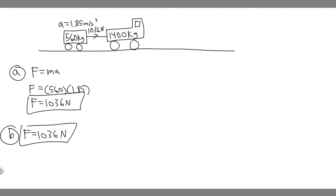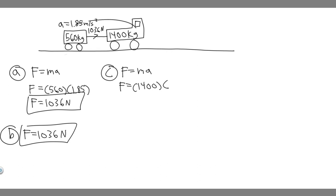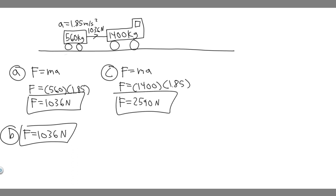For Part C, we're trying to find the net force acting on the car. Instead of using the trailer's mass like we did for Part A, we now use the car's mass. Force equals mass times acceleration: the car's mass is 1,400 kilograms, multiplied by the acceleration of 1.85 meters per second squared — since they accelerate at the same rate. That gives us 1,400 times 1.85, which equals 2,590 Newtons. So the answer to Part C is 2,590 Newtons.